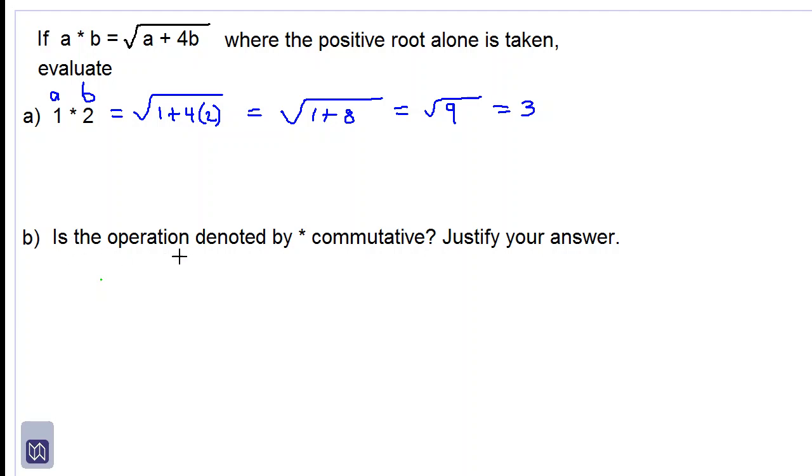Part b: Is the operation denoted by star commutative? Justify your answer. If the operation is commutative, then a star b would be equal to b star a. This is what we want to find out. We are asking if 1 star 2 would be equal to 2 star 1.